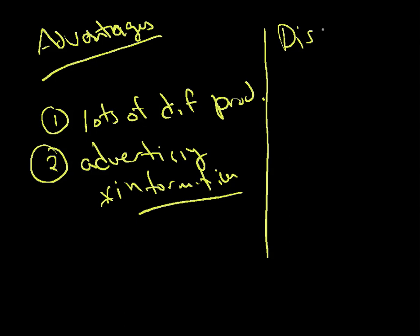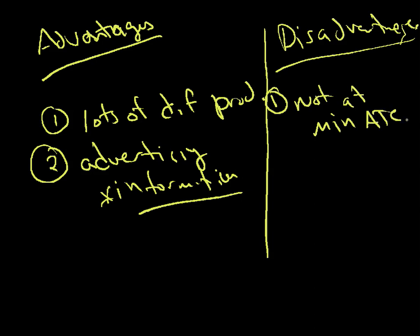What are some of the disadvantages? These are more kind of classical economic model disadvantages, things like not producing at minimum average total cost. As a matter of fact, a nice thing to think about is that these companies actually have manufacturing plants with excess capacity.